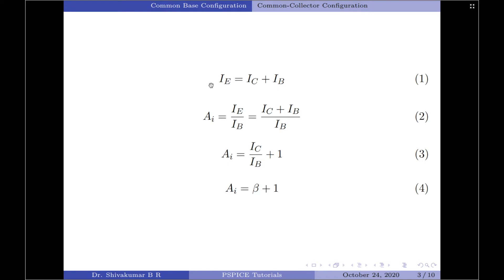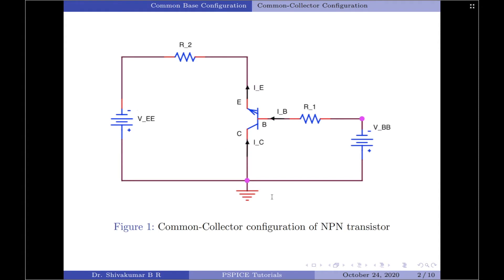We start with the equation IE = IC + IB. The current gain is the ratio of IE to IB. Since IE = IC + IB, substituting and simplifying gives the current gain as beta plus one. This configuration is non-inverting — the signal voltages VIN and VOUT are in phase, where VBB is VIN and VEE is VOUT. Since the transistor acts as a voltage follower, its voltage gain is unity and it functions as a voltage buffer. The load resistance receives both base and collector currents, giving a large current gain similar to the common emitter configuration, providing good current amplification with very little voltage gain.